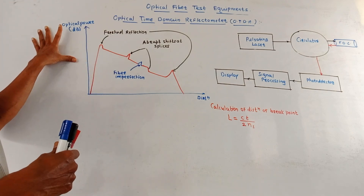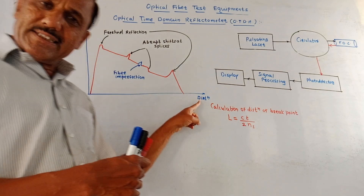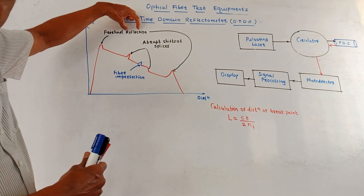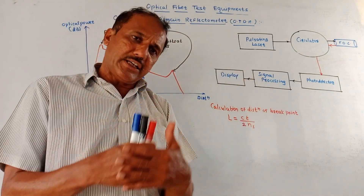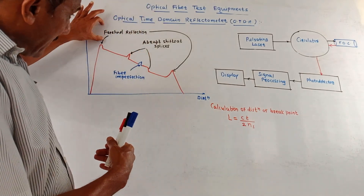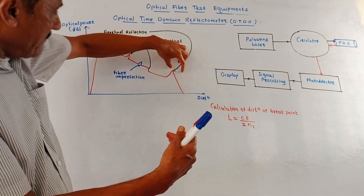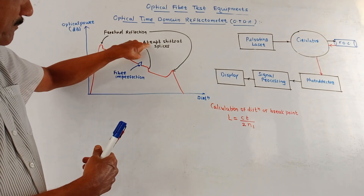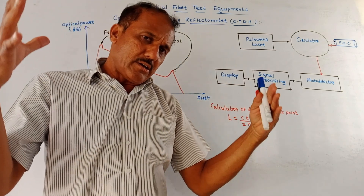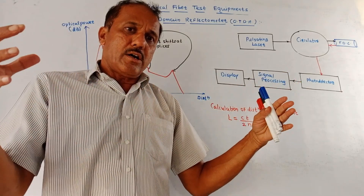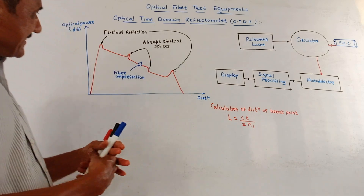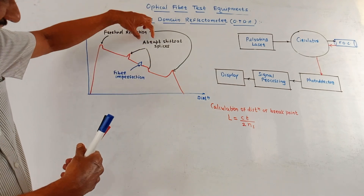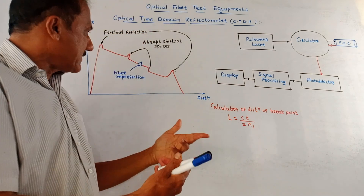The OTDR display is a graph of optical power (measured in dB) versus distance. The first initial peak indicates fractional reflection — this is the reflection taking place due to the change in refractive index. This fractional reflection also occurs at the end of the fiber optic cable, so the starting and ending points of the optical cable are visible. Spikes show abrupt shifts at splices or connectors, since splices and connectors are used to join fiber optic cable, causing abrupt changes in the graph of optical power versus distance.